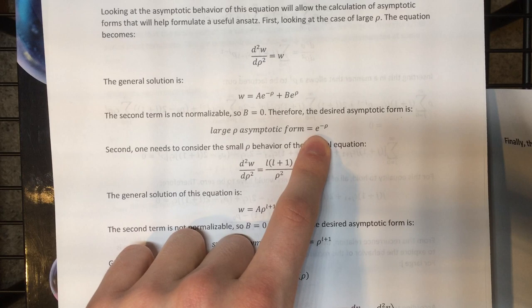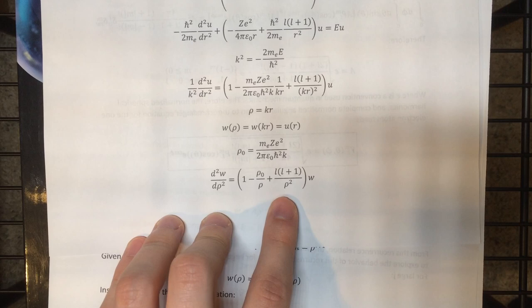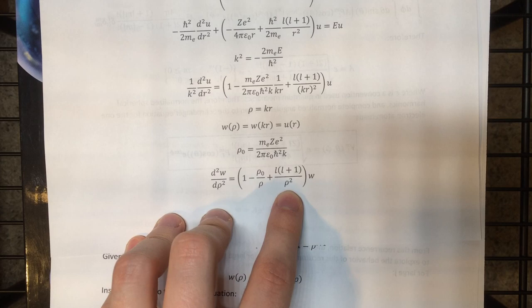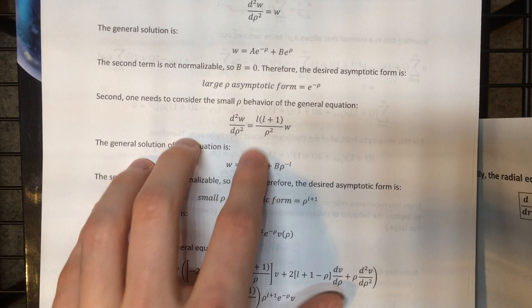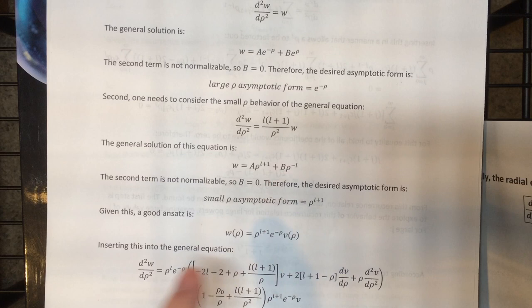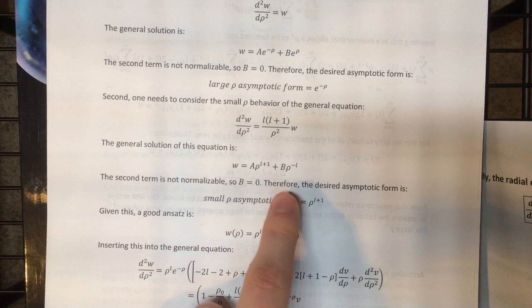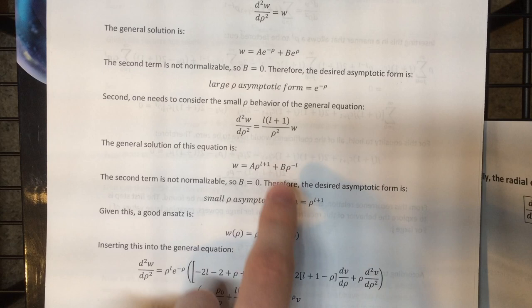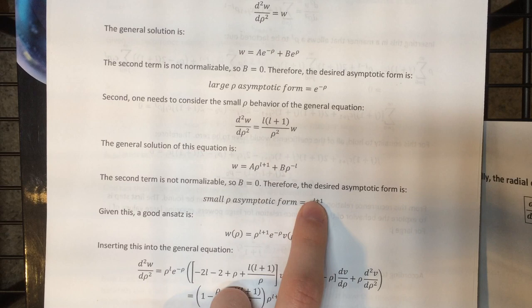Now we look at the small rho limit. The l(l+1)/rho-squared term is going to dominate — it grows fastest as rho goes to zero — so that's the only one left in that limit. We get a simple equation whose normalizable solution is rho to the l, while rho to the minus l has a singularity at rho equals zero that makes it non-normalizable. So we set b equals zero again and take rho-to-the-l as our small-rho asymptotic form. Our ansatz then becomes the product of these two asymptotic forms times an unknown function v of rho.